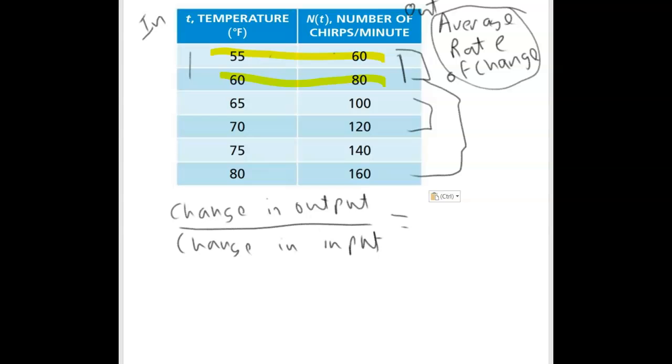I'm going to do the difference of the two outputs divided by the difference of the two inputs. The difference of the two outputs, I can do 60 minus 80. If I start with 60 on top of this ratio, I have to start with the input that goes with it on the bottom. I can't do 60 minus 55, I have to do 55 minus 60. What I get is negative 20 over negative 5. Negative divided by a negative is positive, so I get 4.